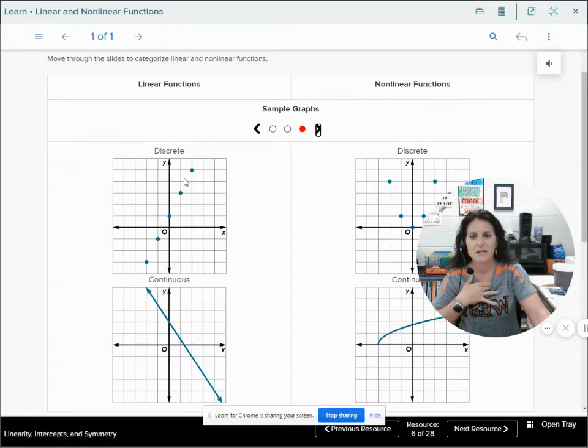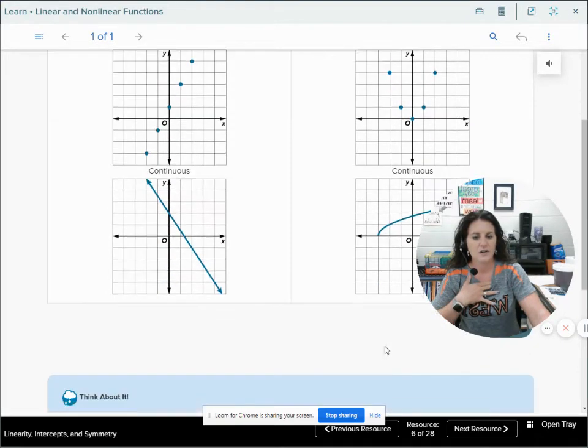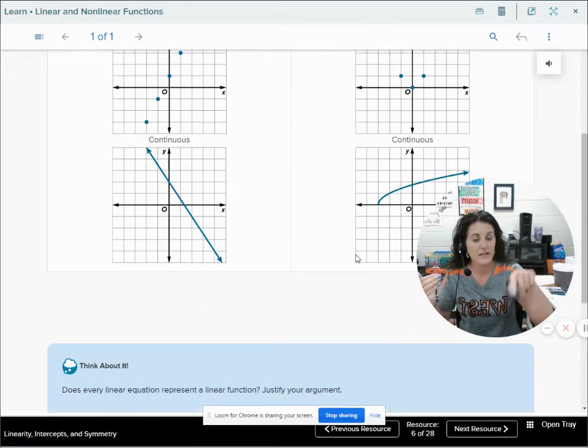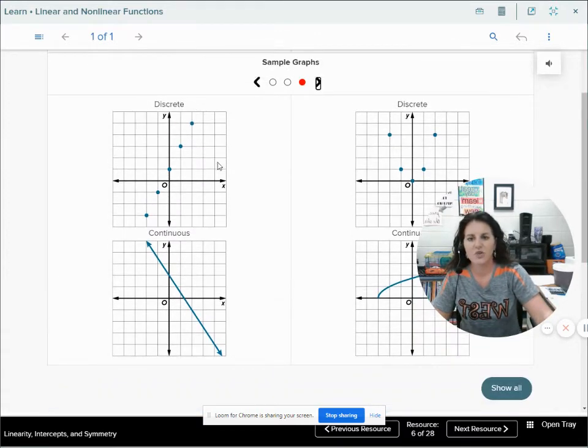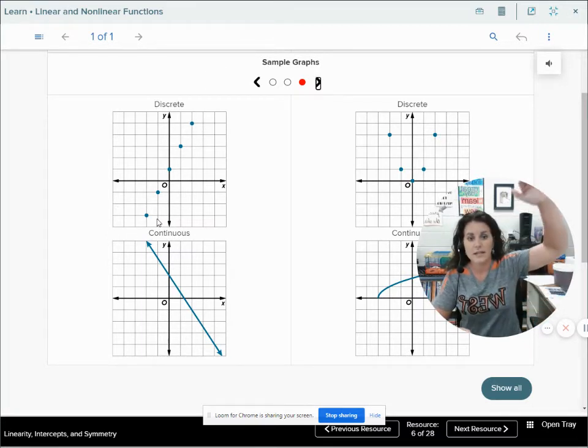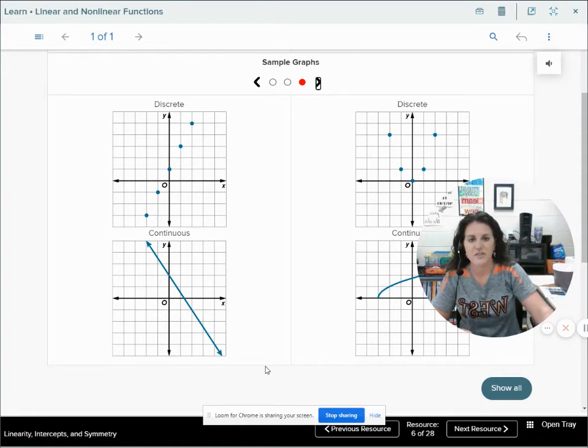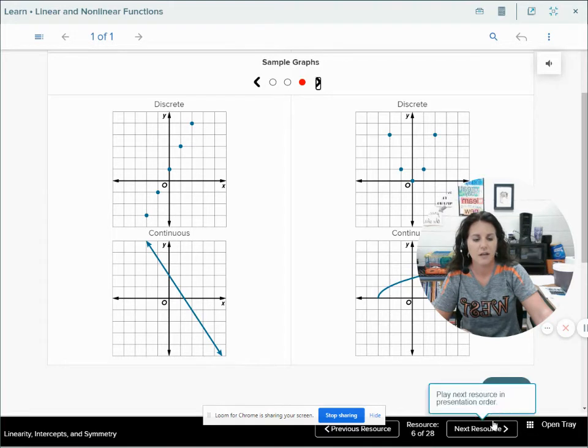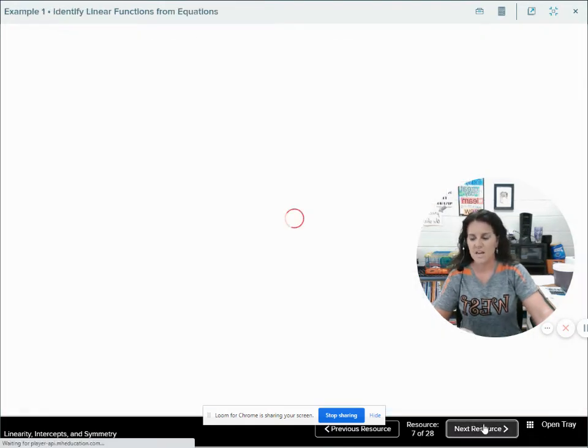Here are some linear functions, here are some nonlinear functions. Notice they have exponents higher than or different than 1. G(x) has an exponent of 2, y has an exponent of 3. The square root is the same as having an exponent of 1 half. This x being in the denominator has an exponent of negative 1. These all have exponents different than 1. All of these have an exponent of an understood 1, therefore they're linear. And some graphs: nonlinear functions have curves. A circle would be nonlinear. This is a discrete linear function because all the points, if I were to connect them, lie on a line. This is a continuous linear function. This is a discrete nonlinear function, they're not all in a line. This is a continuous nonlinear function.